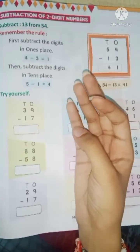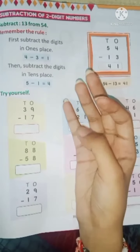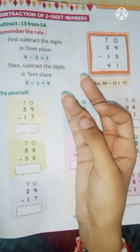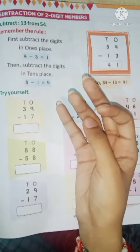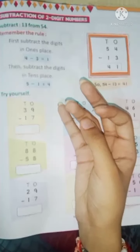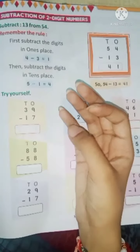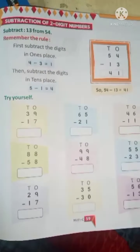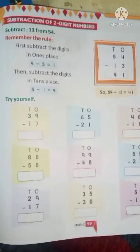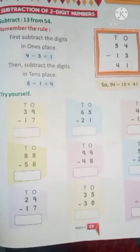Same like this. Next one is 5 minus 1. Count 5. 1, 2, 3, 4, 5. Minus 1. Ismise hum 1 minus kar denge. Ab batayye kitna bacha. 1, 2, 3, 4. So, write 4 here. So, if we minus 13 from 54, the answer that we get is 41.